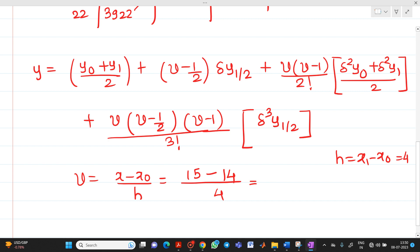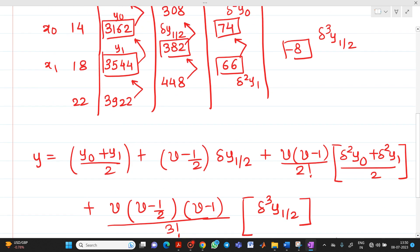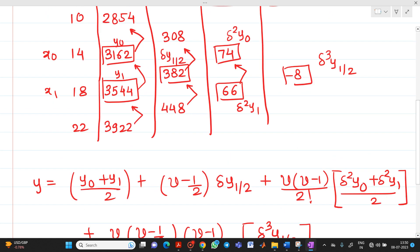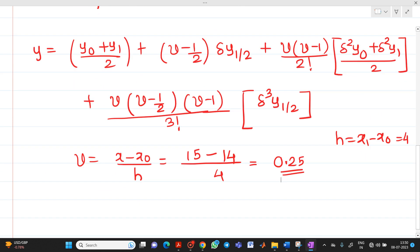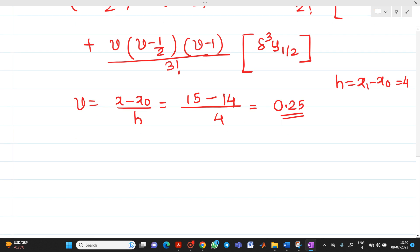So 15 minus 14 divided by 4. So if you do it, you will get answer as 0.25. So you just substitute all the values. Here now I have written all these things: what is y0, y1, del y 1/2, del square y0, del square y1, del cube of y 1/2. Already we have found out what is the value of v.